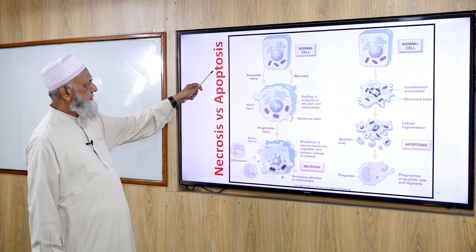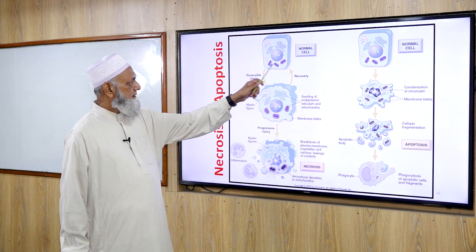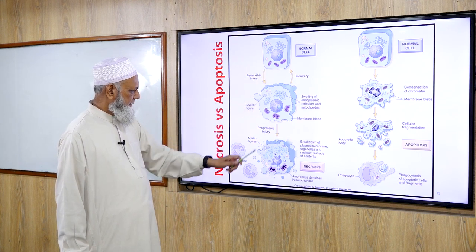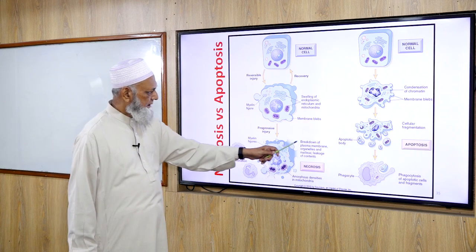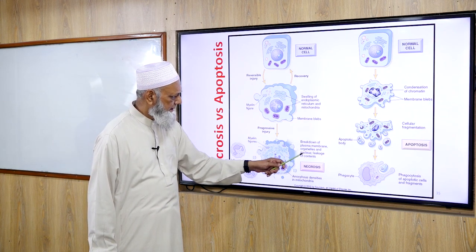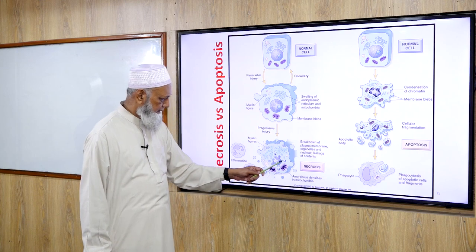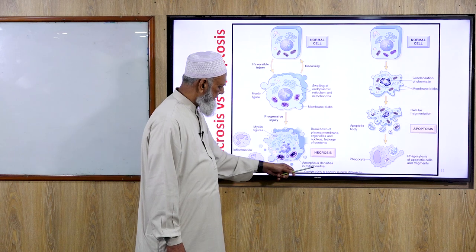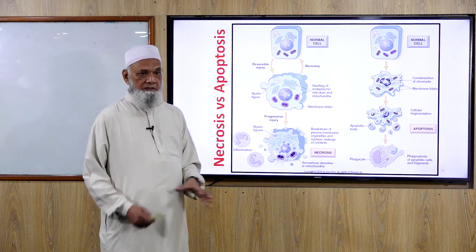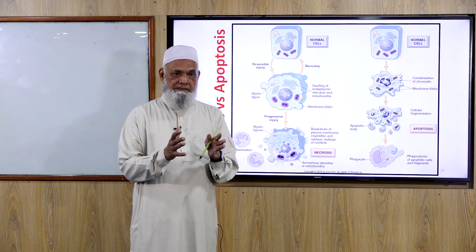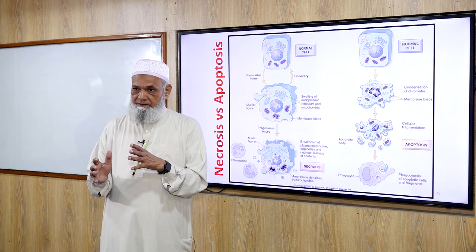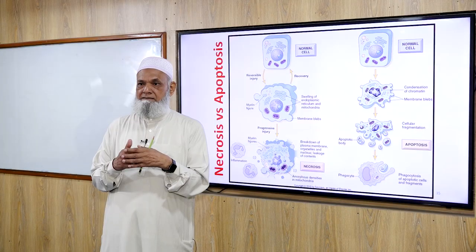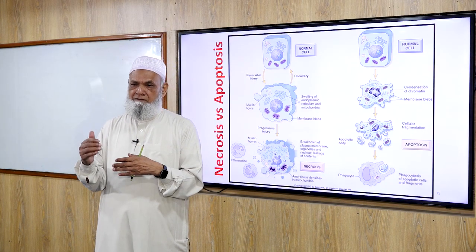Necrosis versus apoptosis: reversible cell injury leads to recovery; irreversible injury leads to no recovery. Irreversible features include myelin figures, breakdown of the plasma membrane, organelles and nucleus, leakage of nuclear content, inflammatory cells, and amorphous densities in the mitochondria. Irreversible cell injury features at the electron microscopic level: high-amplitude mitochondrial swelling with large homogenous densities in the mitochondrial matrix, cell membrane rupture, lysosomal membrane rupture, and swelling of all organelles and membranes.